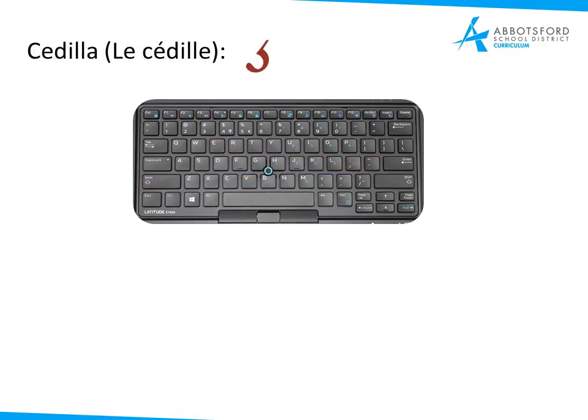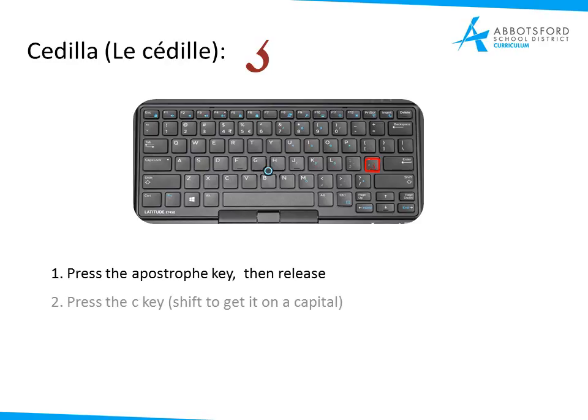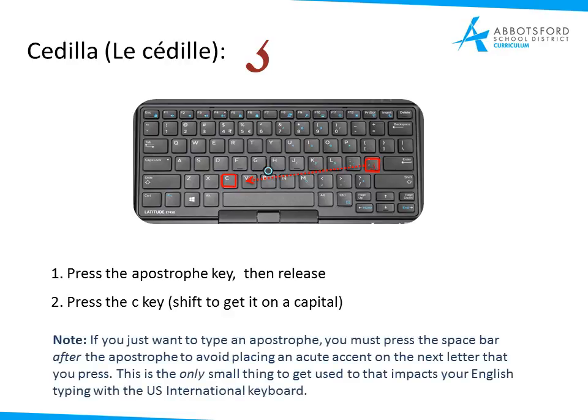The cedilla — the little hook underneath your C — is again your apostrophe key. Select the apostrophe and then press C. If you want it on a capital, capitalize it by doing Shift+C instead. Very straightforward. Because it uses the apostrophe key without Shift, if you're typing a word like j'ai in French, you'll need to do an apostrophe then space to make that work out correctly.